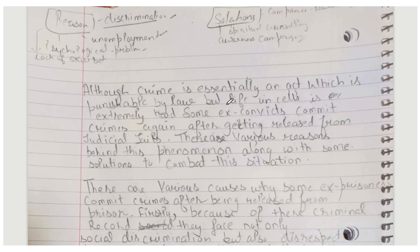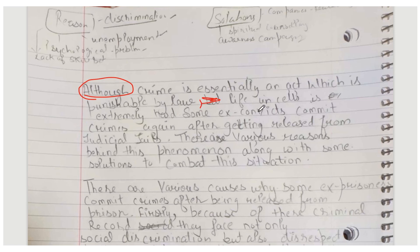But life in cells is extremely hard. Whenever you use the 'although' structure, you don't put 'but' inside it — a comma will come there. This comma represents the 'but', so you don't need to write 'but' separately.